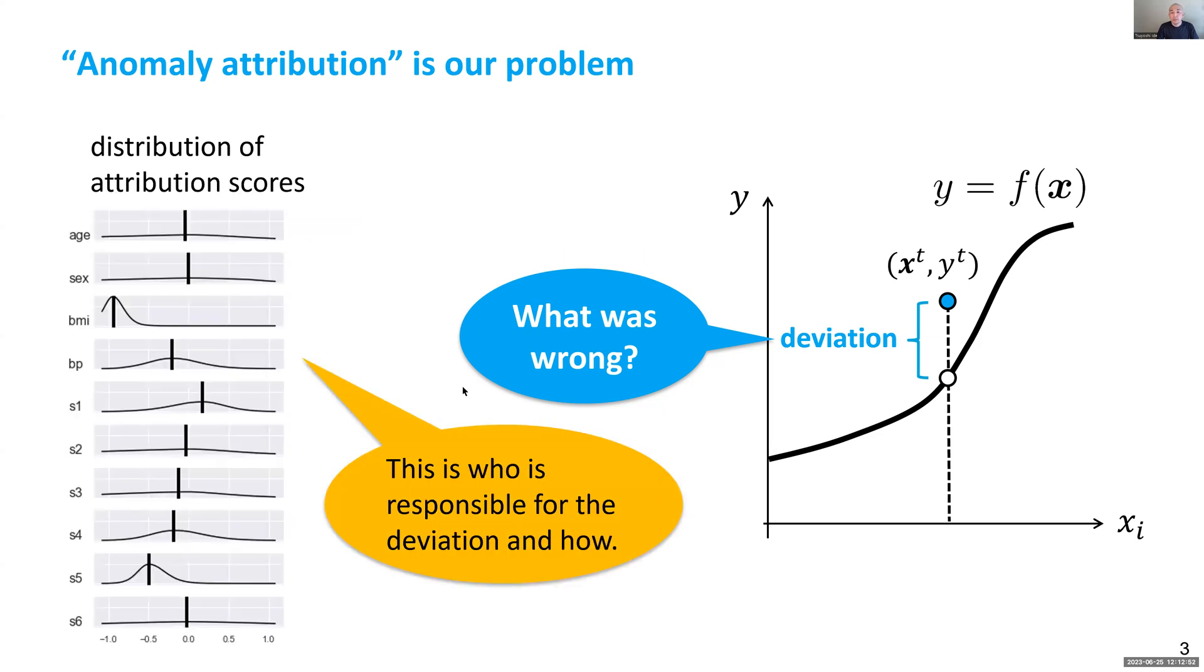So basically, this is what you're going to get running my algorithm. You're going to get the distribution of attribution score, which is basically to explain who is responsible for the observed deviation and how.